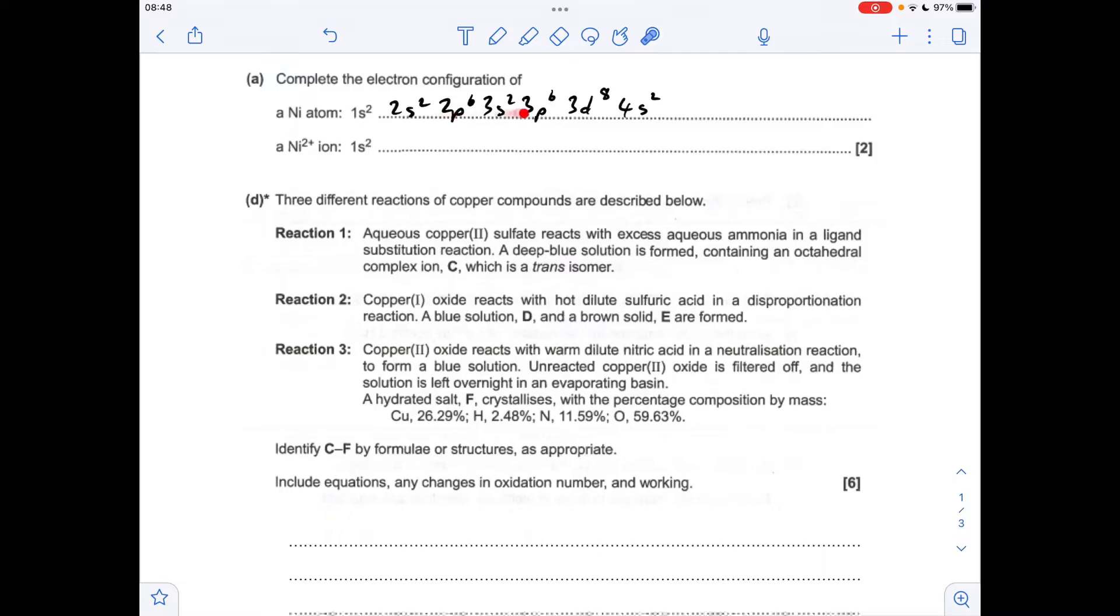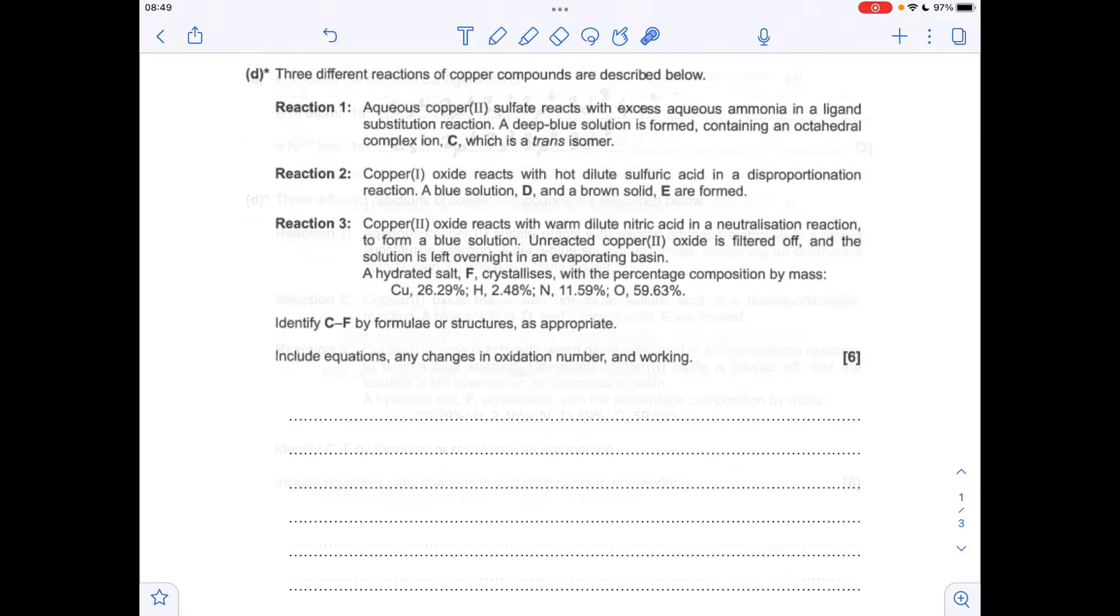Okay, so make a start. The nickel atom has this configuration - you can have the 3d8 and 4s2 the other way around if you want. To go to the nickel 2+ ion we need to lose the 4s2 electrons, which gives us that configuration there. Moving on to part d, I've skipped parts b and c on the question because they had nothing to do with the transition elements.